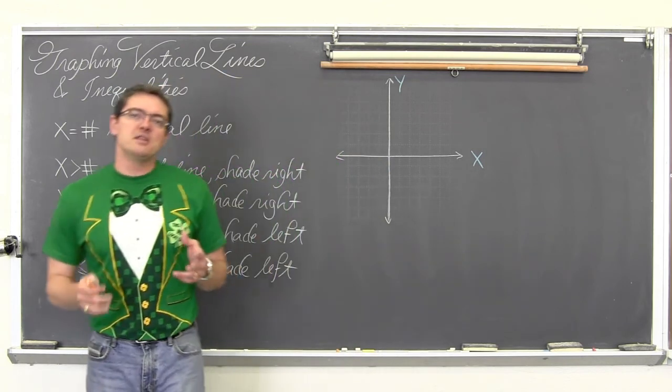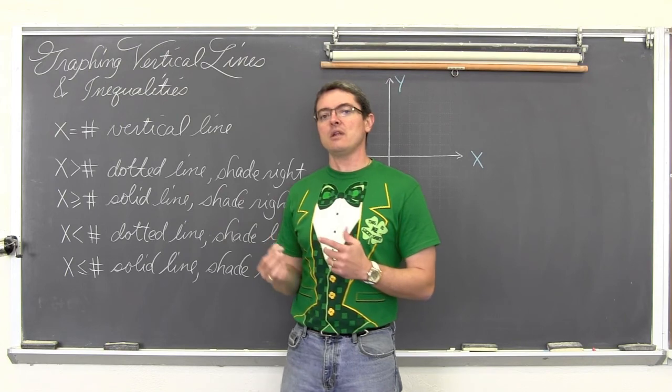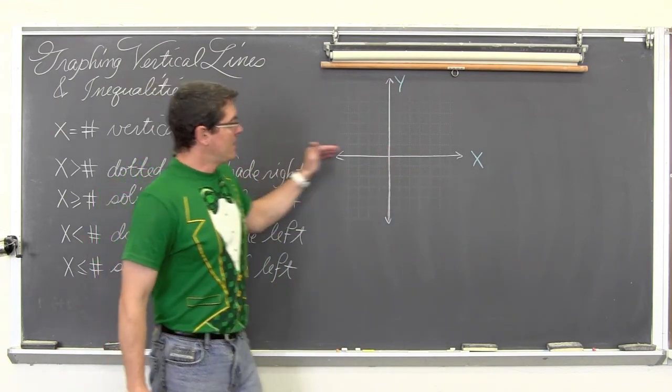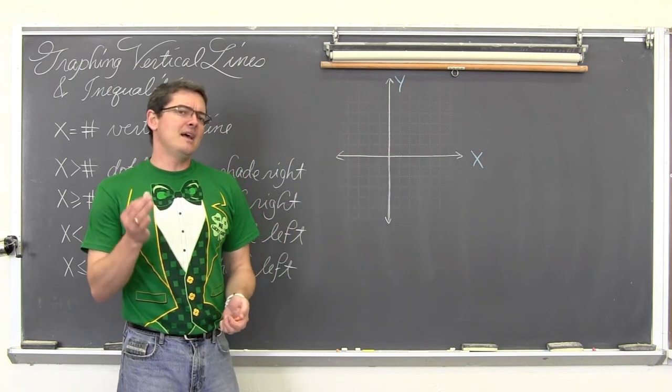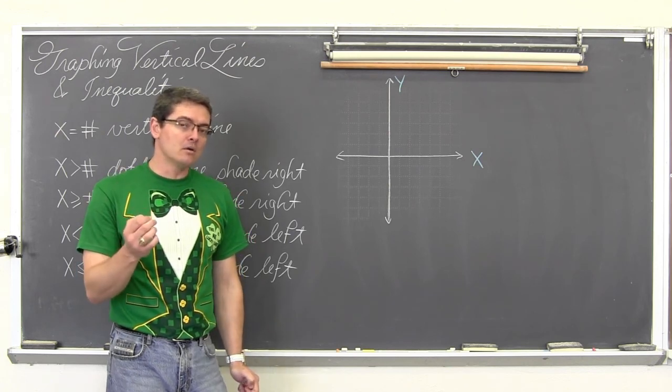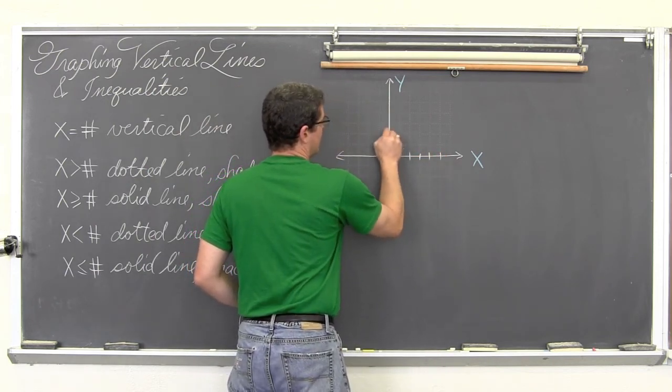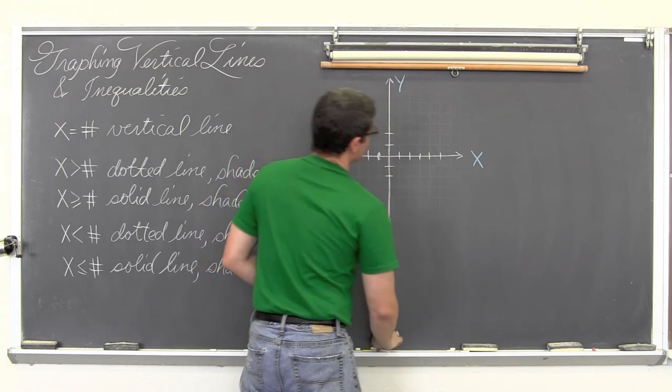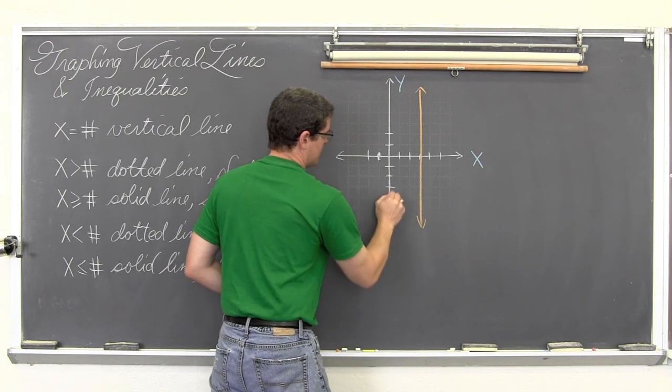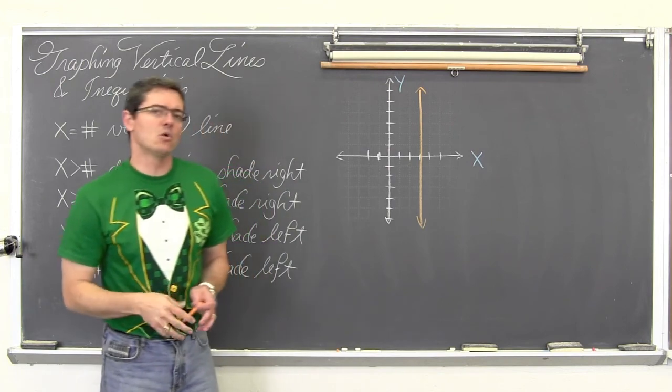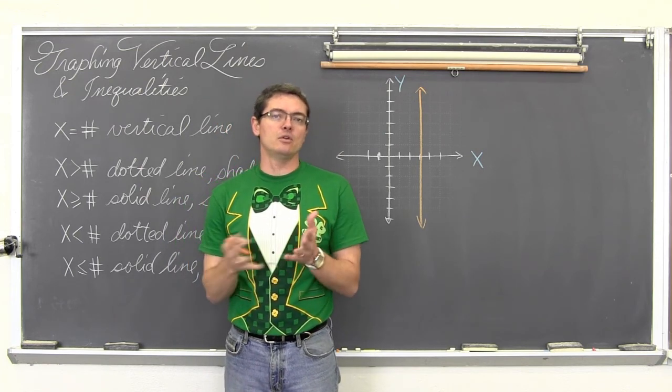Now before we worry about actually graphing these inequalities, let's make sure we completely understand why is x equals a number? Why is that the form of a vertical line? Because when I look at a rectangular coordinate system, the horizontal axis is the x axis, and the vertical axis is the y axis. So if the horizontal axis is the x axis, why is x equal a number? Let's say, well why is that a vertical line? I don't want to give an equation, I want to work this backwards. So let me put a couple of tick marks on here, in case you can't see them on the camera. And let's put a vertical line through here.